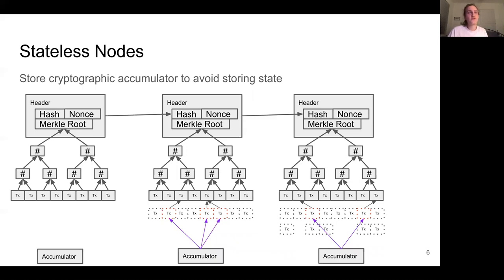Stateless nodes solve both of these problems. Stateless nodes avoid holding the entire state, but instead they hold a cryptographic accumulator, which represents the state. This allows stateless nodes to receive proofs, represented by the purple arrows in this figure, that transactions exist in the state. And this way, they can verify and forward blocks without worrying that the blocks may be invalid.